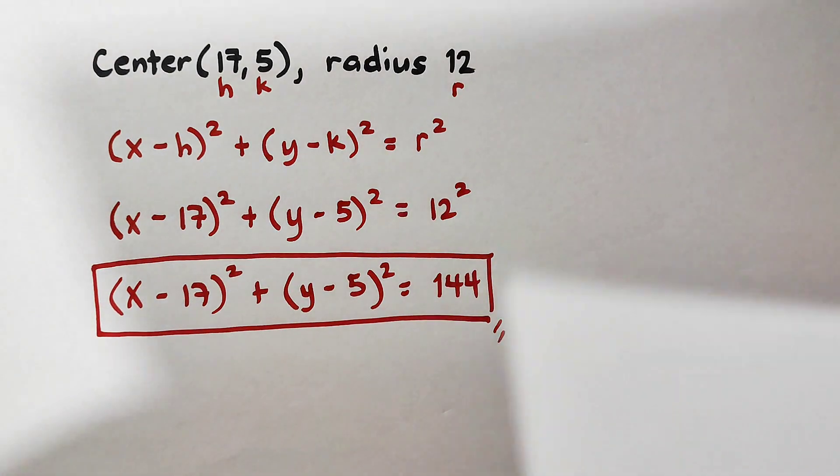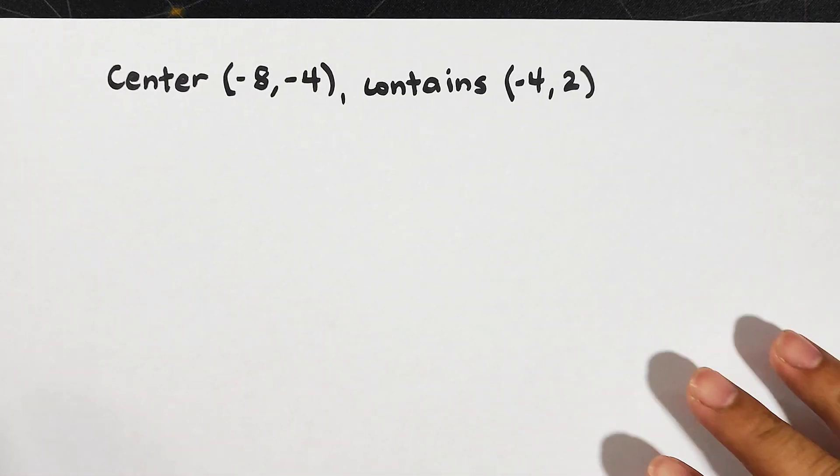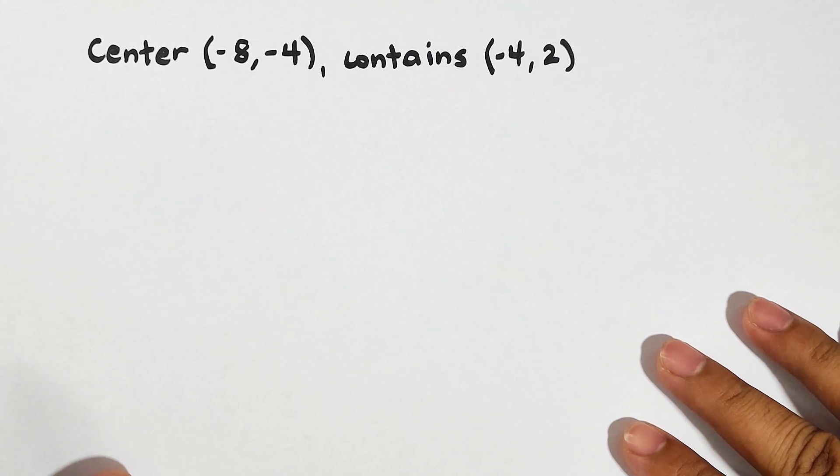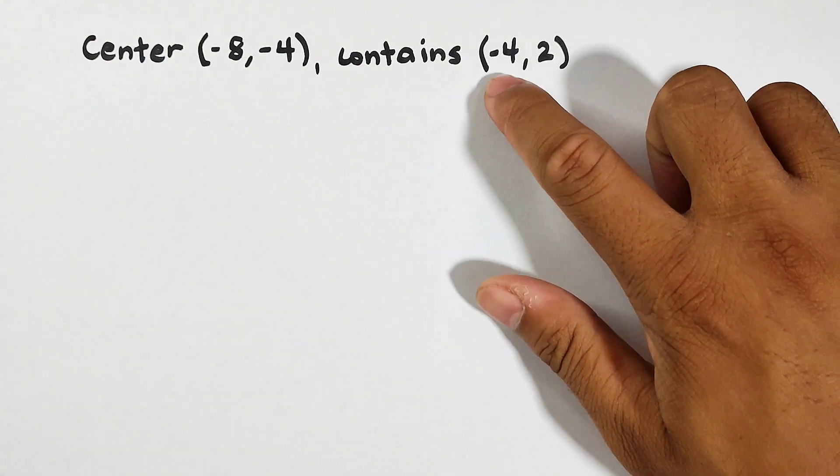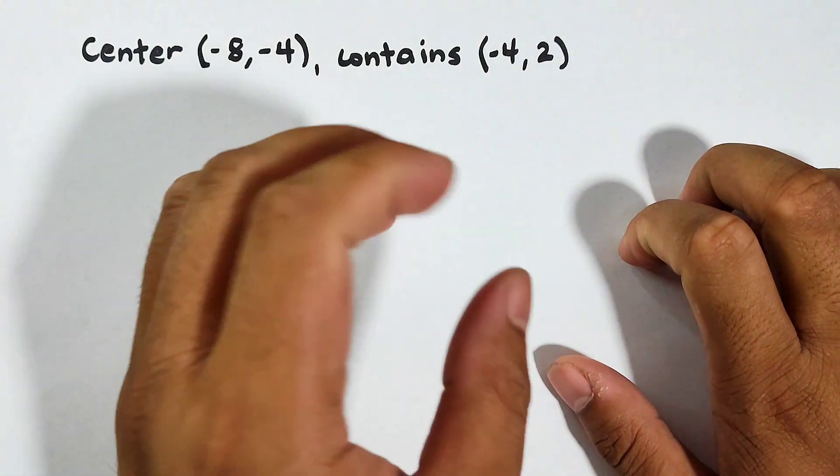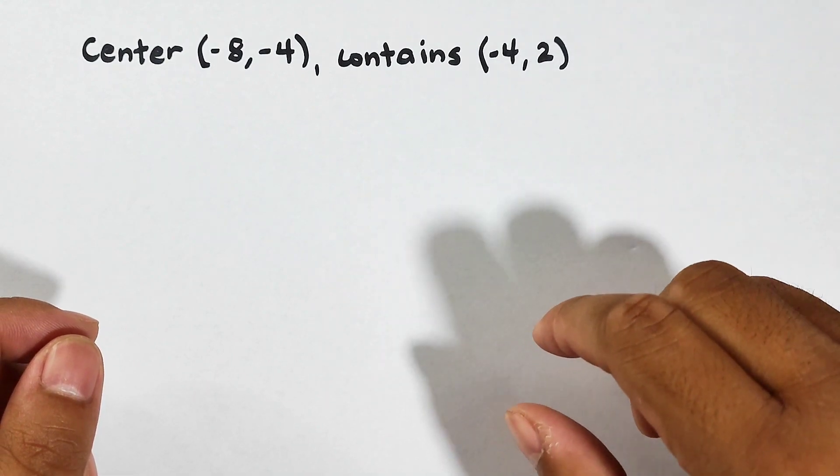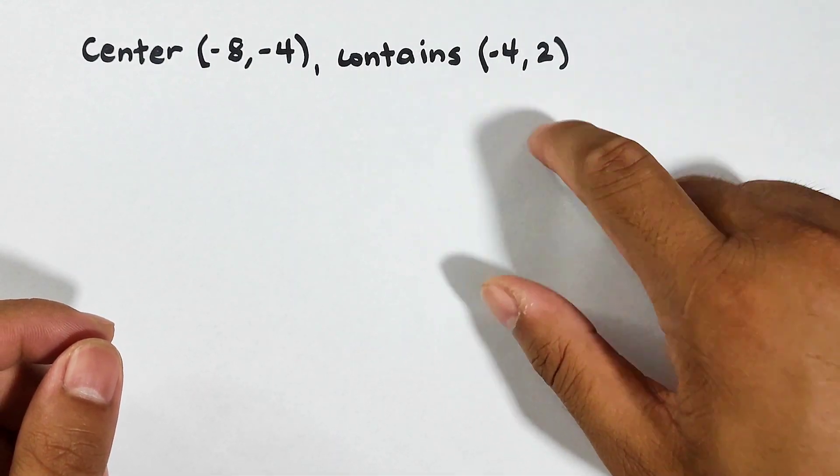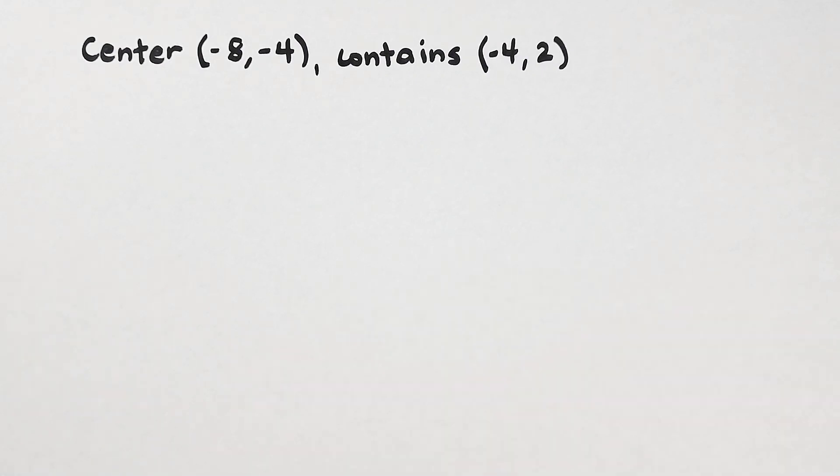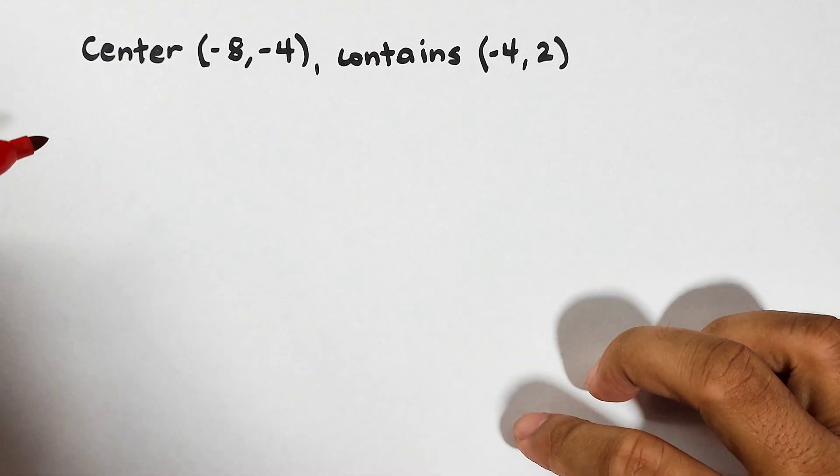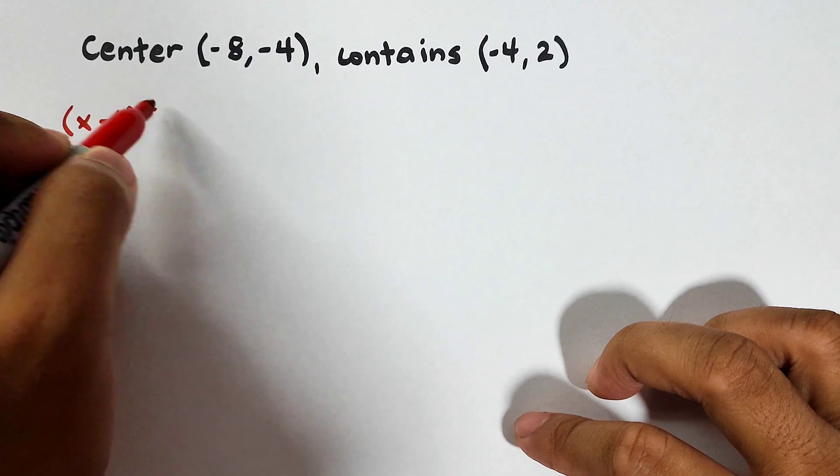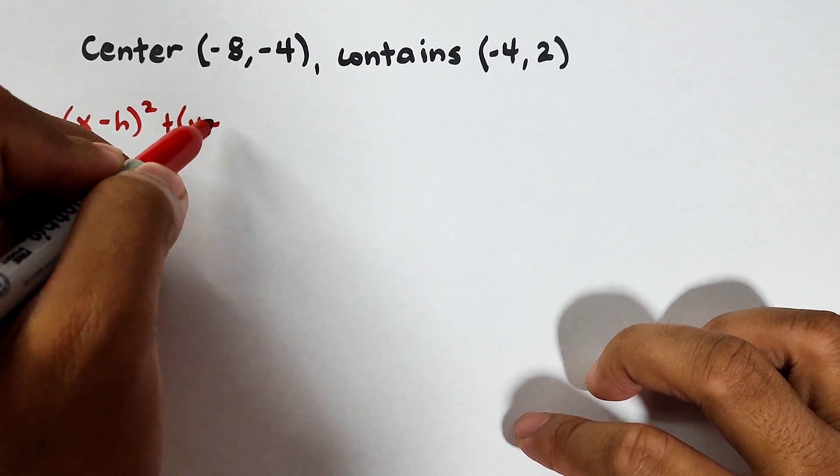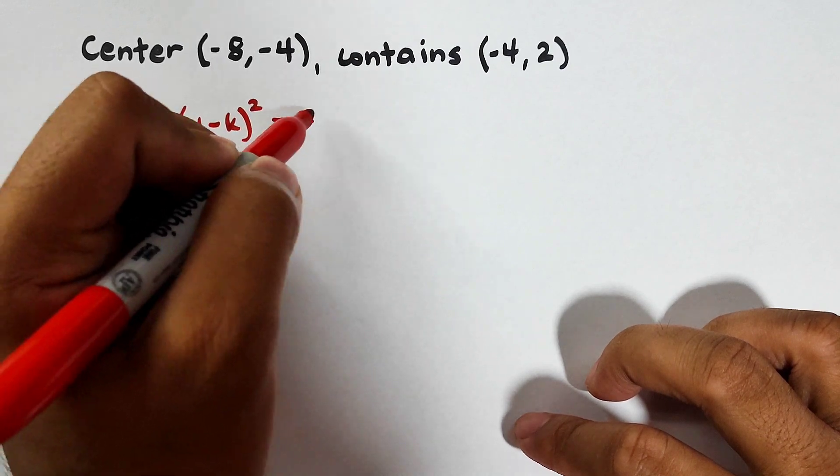For number 2, we are given here another scenario about the equation of this circle in which we are given the center which is negative 8, negative 4 and it contains negative 4, 2. What this means is the circle passes through this point. Now, so what are we going to do? First, of course, we need to consider the center radius form.